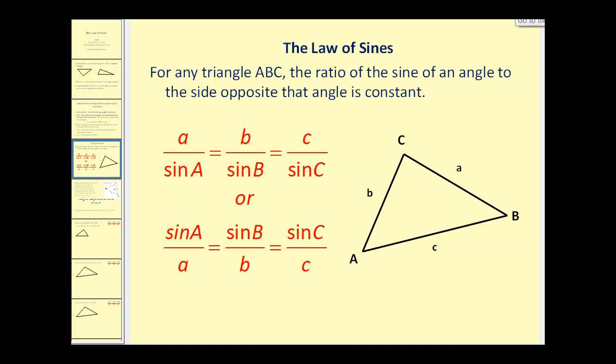So let's go ahead and state the law of sines. For any triangle ABC, the ratio of the sine of an angle to the opposite side of that angle is constant. And it can be expressed in two different ways. We either have the length of the sides in the numerator and the sines of the angles in the denominator, or we can state it using the reciprocals. And I like to use this form.